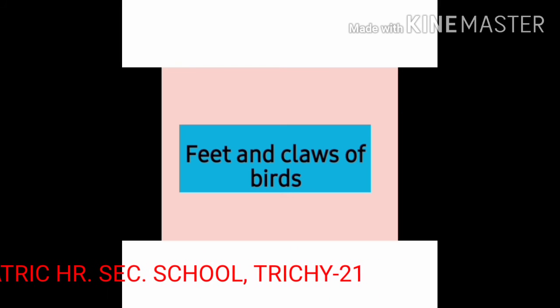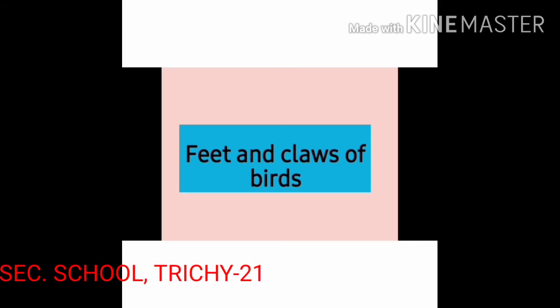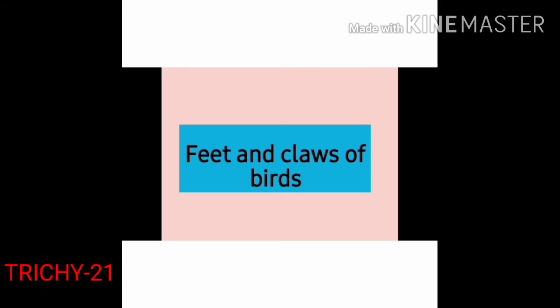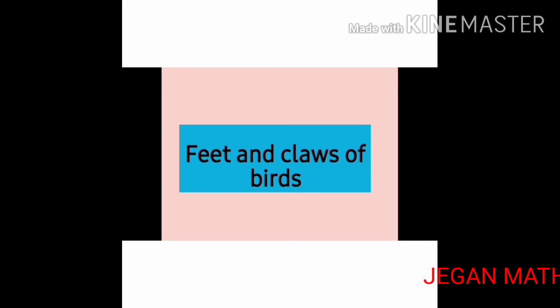Now, let us learn about the main uses of feet and claws to a bird. Birds use their feet and claws in walking, climbing, holding food, swimming and perching. Birds use their claws for self-defense also. The shape of their feet and claws depends on their food habit. Claws have long curved nails.